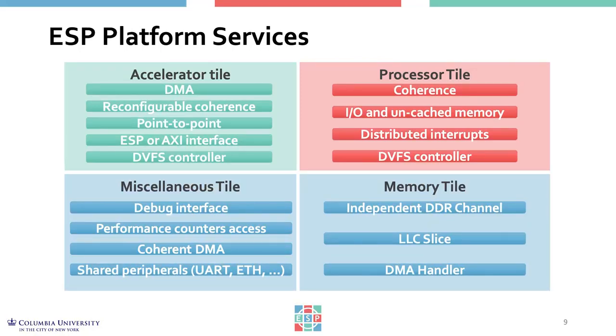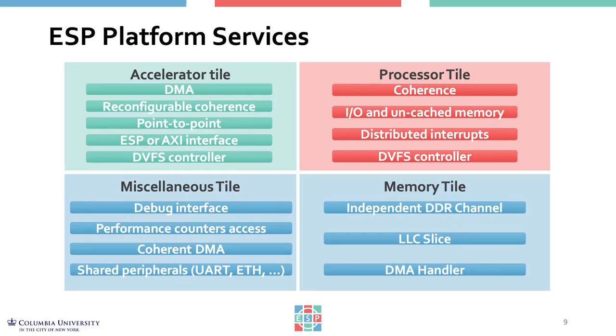There are a variety of platform services implemented in the socket, which may vary depending on the particular tile. Some decisions are made at design time about which services to instantiate, and others are configurable at runtime. For example, accelerators can have different models of coherency — fully coherent, last-level cache coherent, or not coherent — selectable on a per-accelerator, per-invocation basis. Other services include dynamic voltage frequency scaling at the granularity of each tile, and the capability of setting up multi-plane data flows on the network-on-chip to enable point-to-point communication between specific tiles depending on the workload.